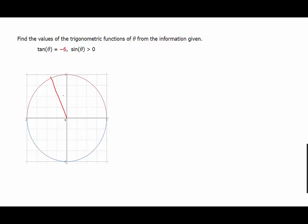It's also going to be oriented so that the y-coordinate will be six times the x-coordinate. The reason for that is because the tangent is negative six, so that means the opposite will be six and the adjacent will be one for the triangle, but negative one for the x-coordinate. Using the Pythagorean theorem, we find that the hypotenuse of this right triangle, formed by dropping a vertical down to the x-axis, will be the square root of 37. So x will be negative one, y will be six, and r will be the square root of 37.